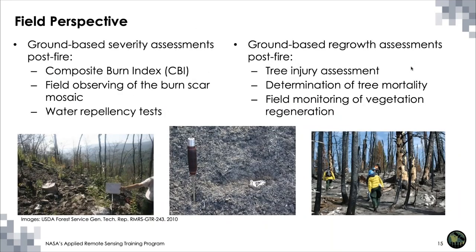Before diving into satellite sensor data for post-fire assessments, it's important to mention ground-based methods we attempt to approximate with remote sensing. Field burn severity assessments often use a Composite Burn Index or CBI, developed to assess fire effects on vegetation and soil. CBI plots rate burn severity for substrates, herbs, low shrubs, small trees, tall trees, intermediate trees, and big trees. Ratings are averaged for each category and across all plots to provide a burn severity rating for the entire study area, making it particularly useful for comparison with satellite-derived burn severity.